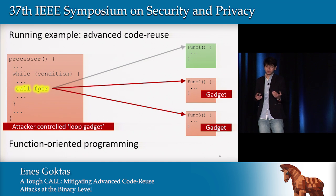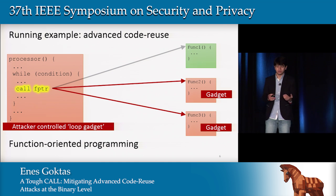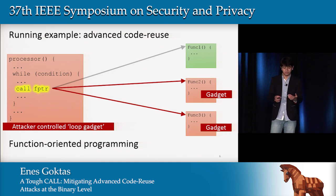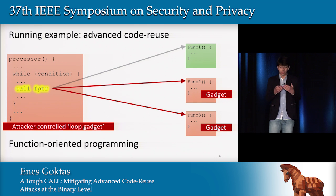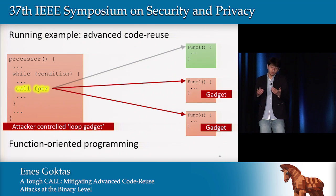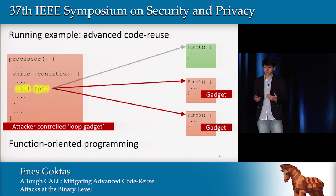The functions that perform the desired functionality are called gadgets, and the main loop gadget is called a loop gadget. This is function-oriented programming.